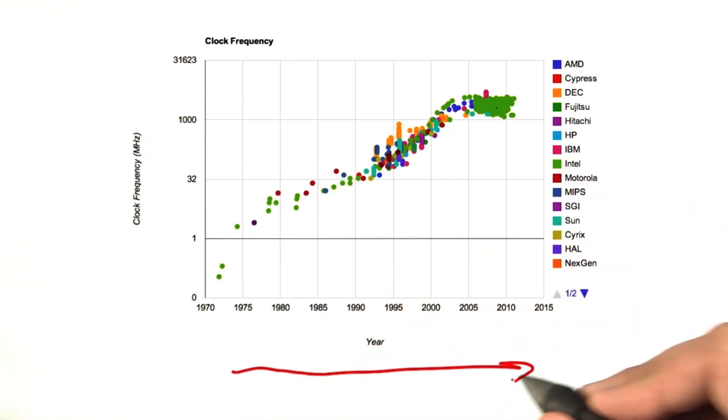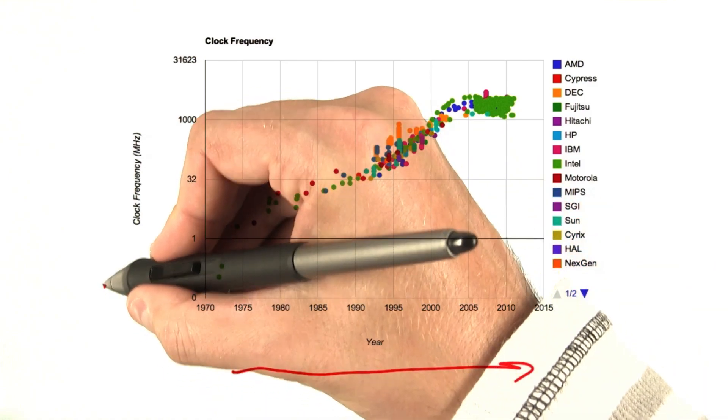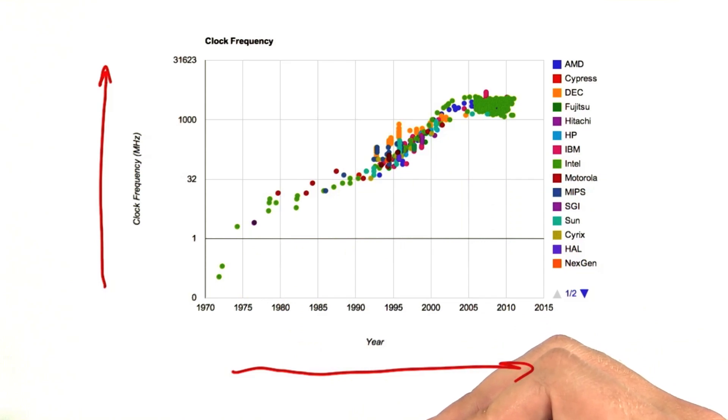So again, we have time going on this axis, okay? So a long time ago, today. And here we have clock frequency, how fast we're clocking these transistors.